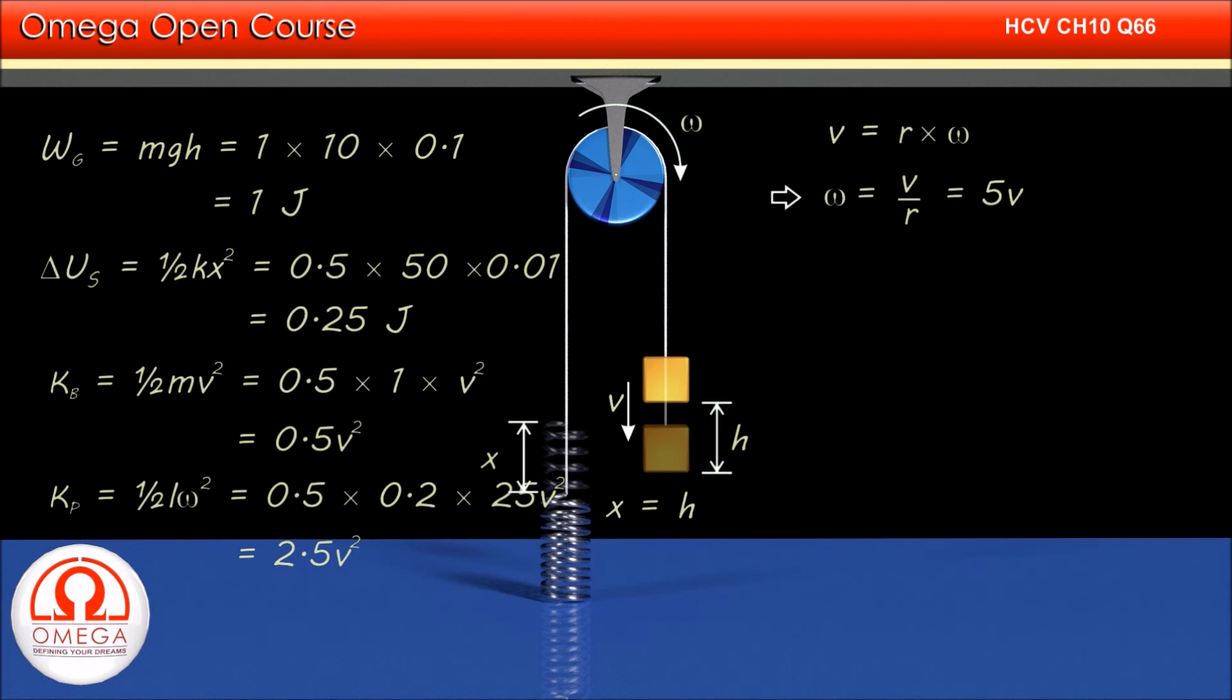As discussed earlier, the spring takes some energy from the work done by gravity, and the rest goes into kinetic energy of the block and pulley. Therefore, work done by gravity minus spring potential energy equals kinetic energy of the block plus rotational kinetic energy of the pulley.